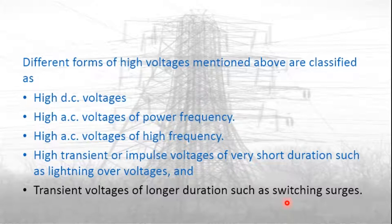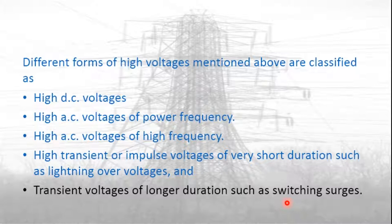Normally in high voltage testing, the current under conditions of failure is limited to a very small value. But in certain cases like testing of surge diverters or short circuit testing of switchgear, high current testing with several hundred amperes is also very important. Testing of surge diverters requires high current of the order of several kiloamperes. Therefore, the test facility requires both high voltage and high current, and high impulse current generation is also required along with high voltage for testing purposes.